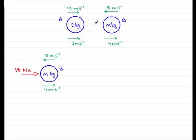Well, we know that if there's an impulse of 18 newton seconds on A, then there'll be an equal and opposite impulse on B. So what I've done is I've drawn that on B.